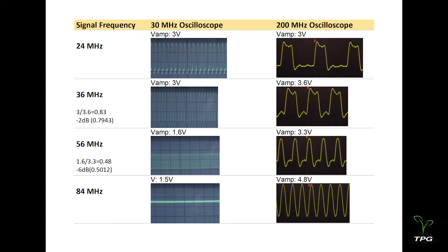This aligns with the claim in the user manual that the bandwidth of this oscilloscope is conservatively rated at 30 MHz.